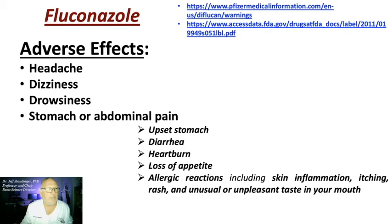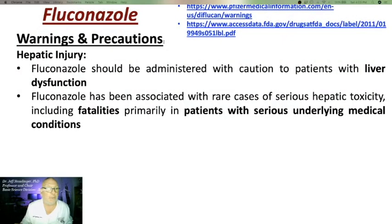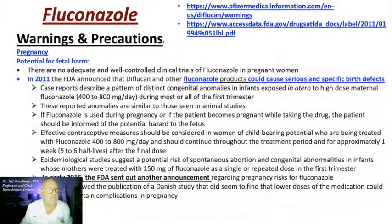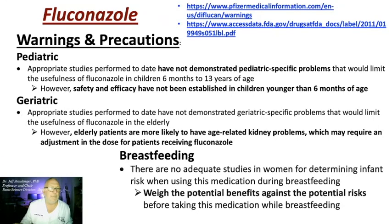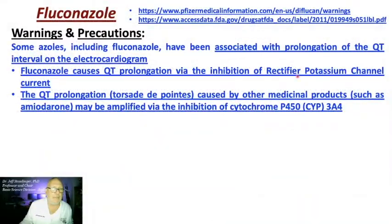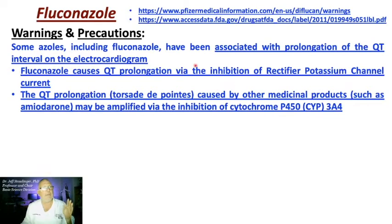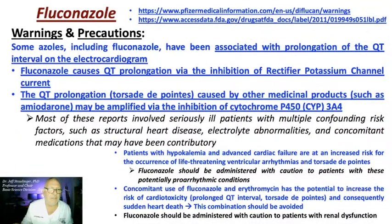There are numerous adverse effects and warnings associated with fluconazole, including hepatic injury and potential for fetal harm in pregnancy. It should not be used in children younger than six months of age. Elderly patients with age-related kidney problems will likely require dose adjustment. With respect to breastfeeding, weigh potential benefits against potential risks. Fluconazole inhibits a rectifier potassium channel, causing QT prolongation — this is the prototypical example of torsades de pointes, also caused by drugs such as amiodarone. Any drug that inhibits CYP3A4 will increase fluconazole levels, which can cause sudden cardiac arrest and death.